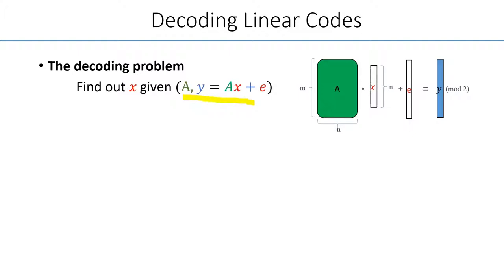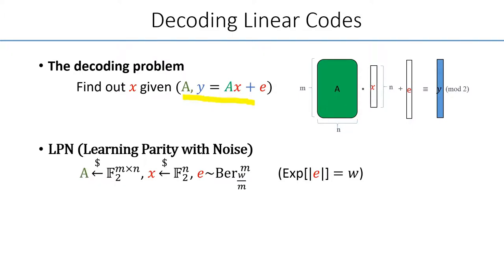The average case version of the problem is called learning parity with noise, where the matrix and secret is sampled uniformly at random, and the noise follows from the coordinate-wise independent distribution, namely the Bernoulli distribution.